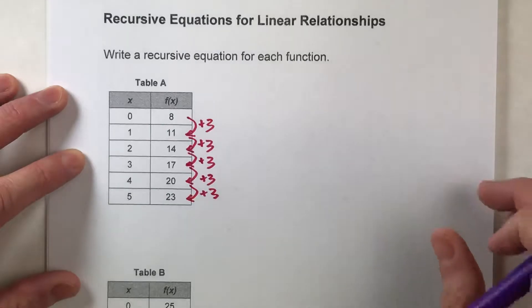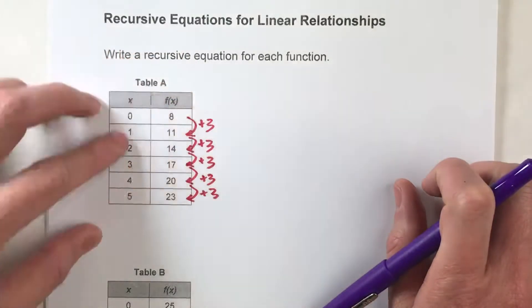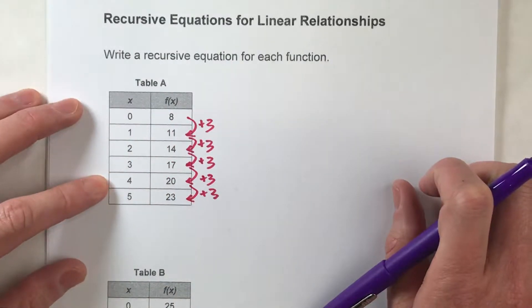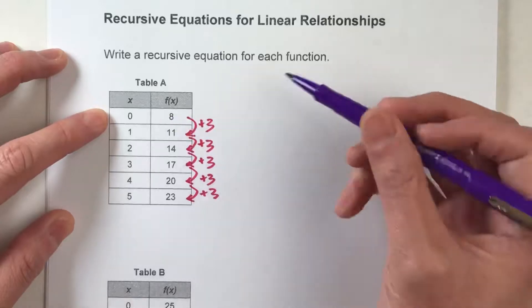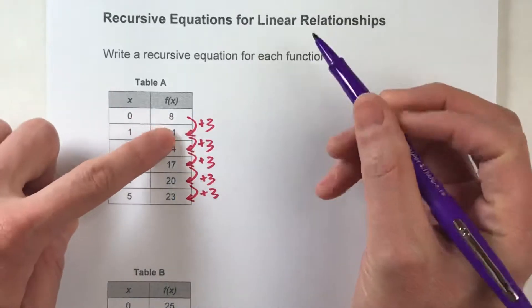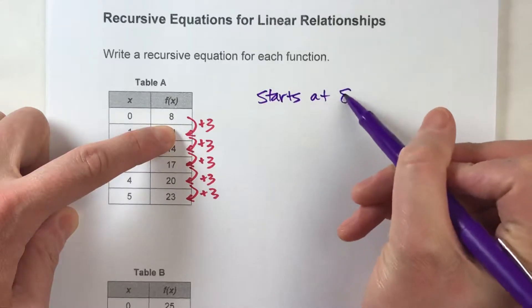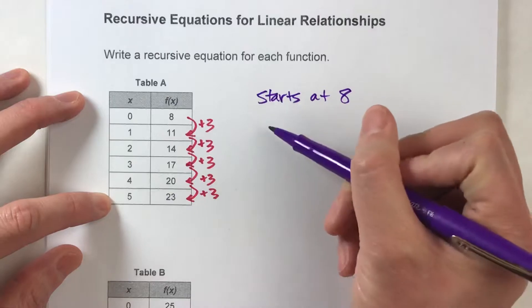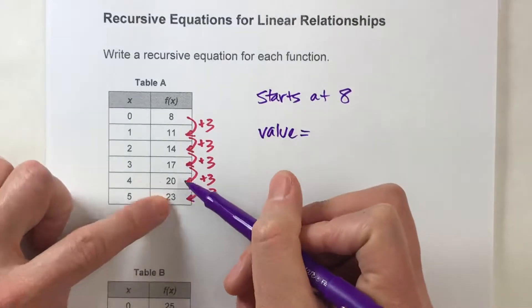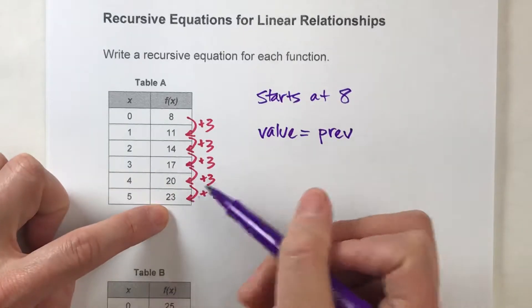So to write the recursive equation, it helps by starting by thinking about how you would describe this pattern, maybe just in words. For example, in this pattern, we see that the table starts at 8, and then each time you want a value, the value is going to be equal to the previous value plus 3.